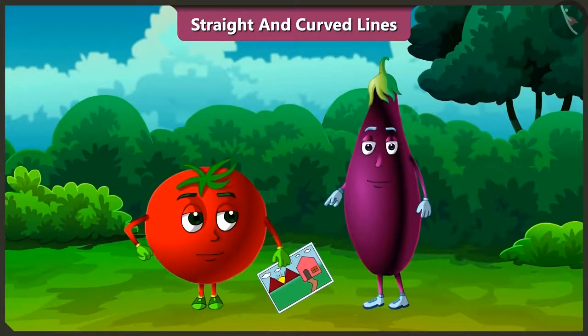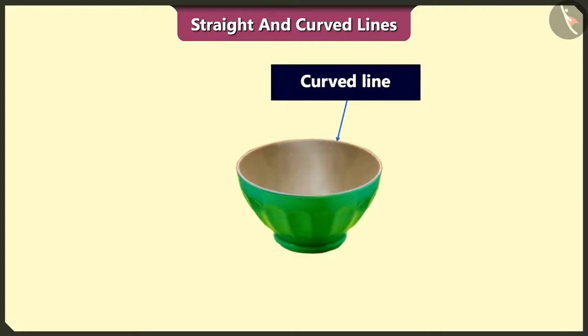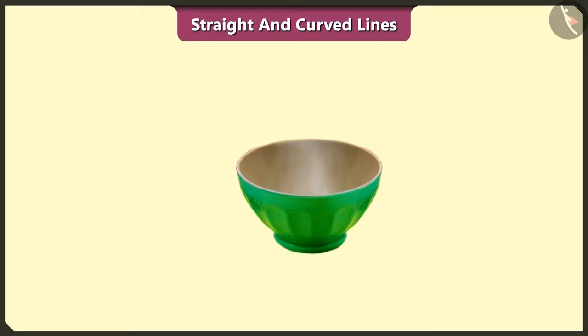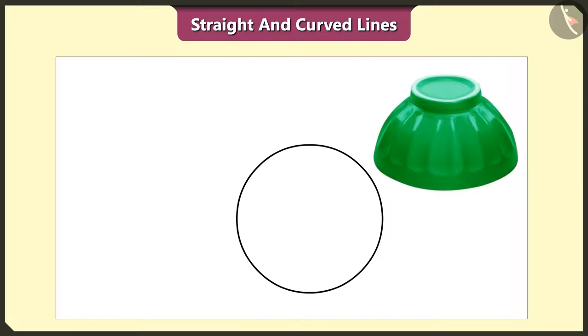Bingo! Can we see straight lines and curved lines in objects other than drawings? Yes, we can see them in various objects around us. Look, this part of bowl is made up of curved line. If we place this bowl upside down and trace it, we get a circle. The circle is also made up of curved line.